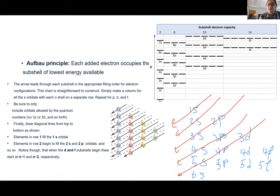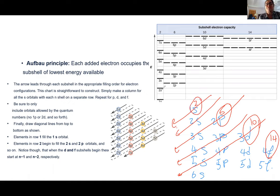Limitations on maximum electrons: for S, the highest number is 2; for P, it's 6; for D, it's 10; and for F, it's 14. This has to do with the number of orbitals in each sub-shell. Every S orbital gets only 2 electrons, every D sub-shell gets up to 10 electrons.